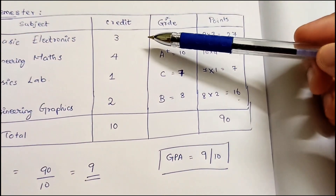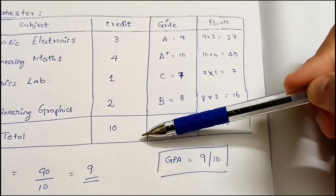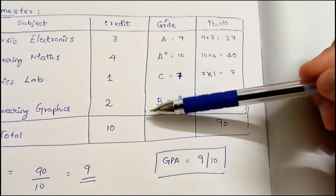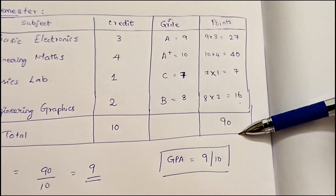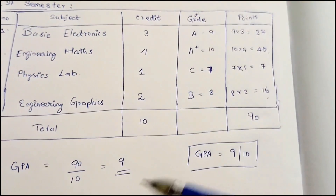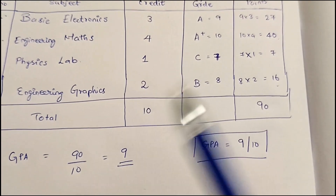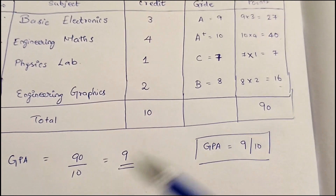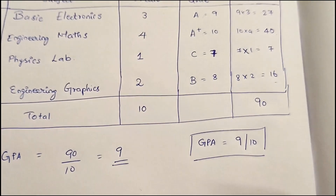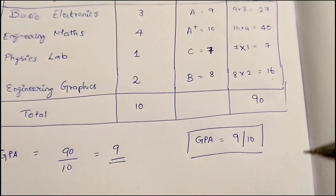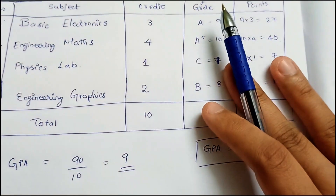The total number of credits is 3 + 4 + 1 + 2 = 10 credits for the semester, and the total points obtained are 90. GPA is calculated by dividing the total points by the total number of credits: 90 ÷ 10 = 9. So your GPA for the first semester would be 9 out of 10.